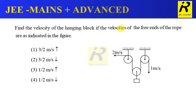Welcome to the channel. For JEE Mains and Advanced, the question is: find the velocity of the hanging block if the velocities of the free ends of the rope are as indicated in the figure. We have a picture showing three pulleys and here is the block. We have to find the velocity of this block.